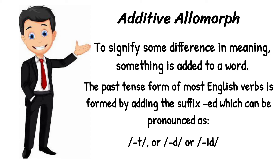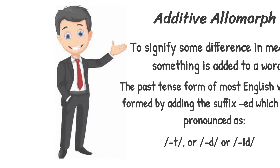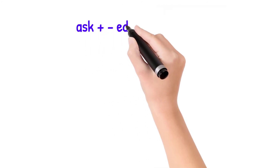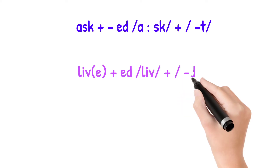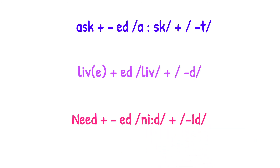The preferred example for the additive allomorph is the -ed morpheme, which is added to most English verbs to make their past tense form. When we add this morpheme, we realize there are three different sounds produced for the same morpheme: /t/, /d/, or /ɪd/, as in the verbs 'asked', 'lived', and 'needed'.